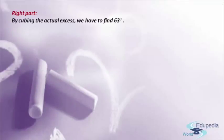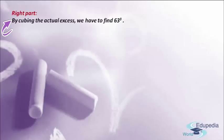After completing the process of the middle part, moving to the process of the right part. The first and last step is to find the cube of the actual excess. The actual excess is 63. In order to find the cube of 63, since it is a two-digit number, I am going to apply Anurupena Sutra.